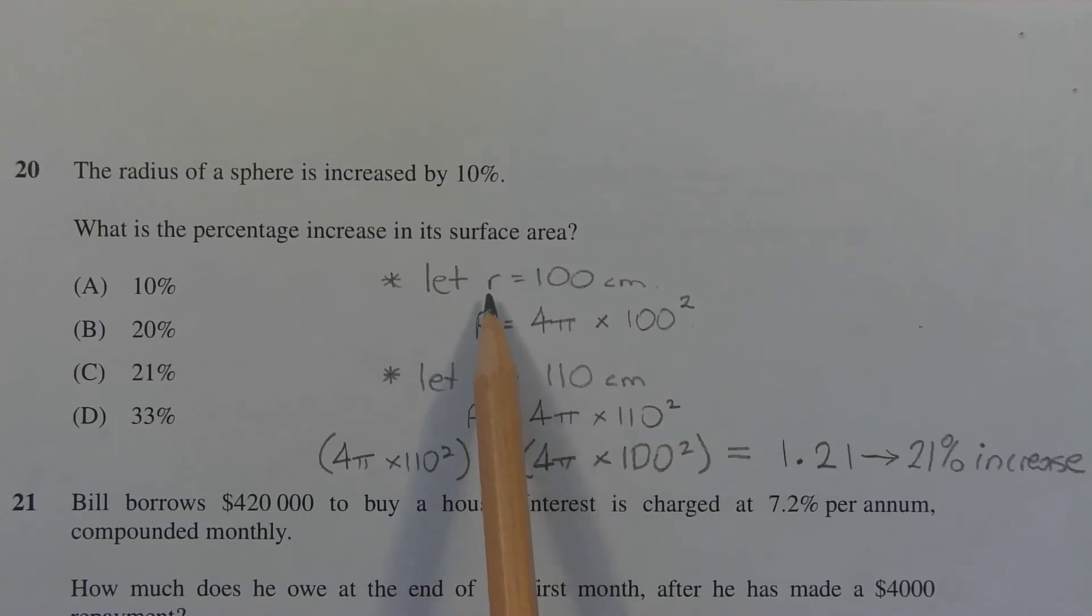Now let's increase this radius by 10% and let's see what happens. So increasing 100 by 10% gives us a radius of 110 cm. And the surface area of a sphere with radius 110 cm is given by 4 times pi times 110 squared.